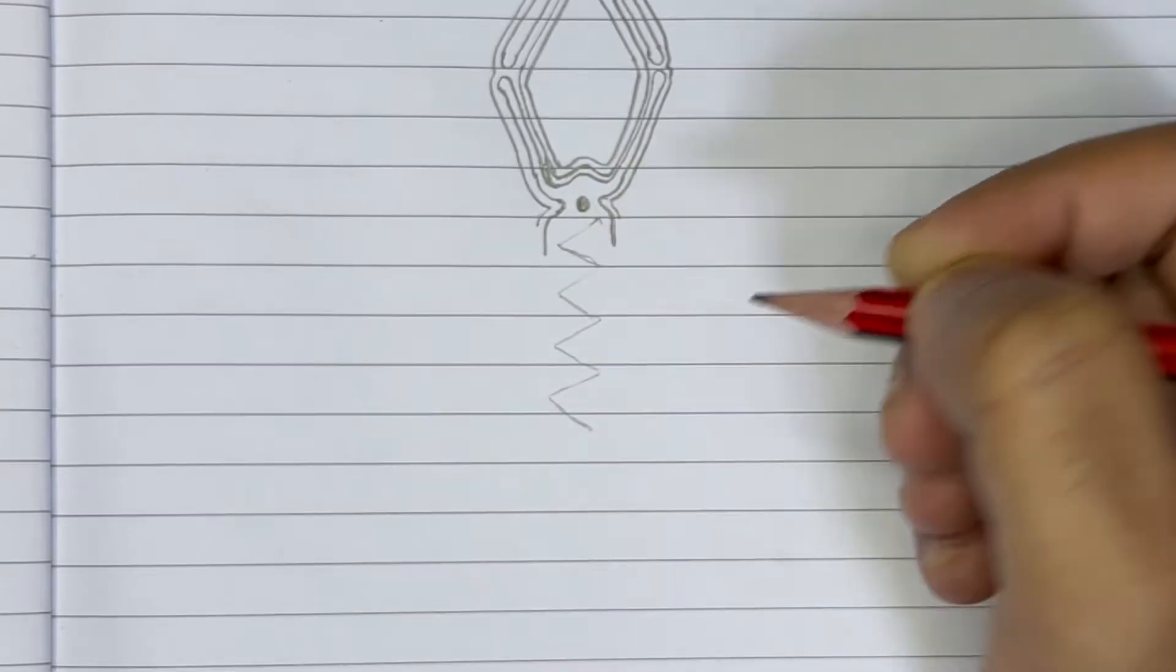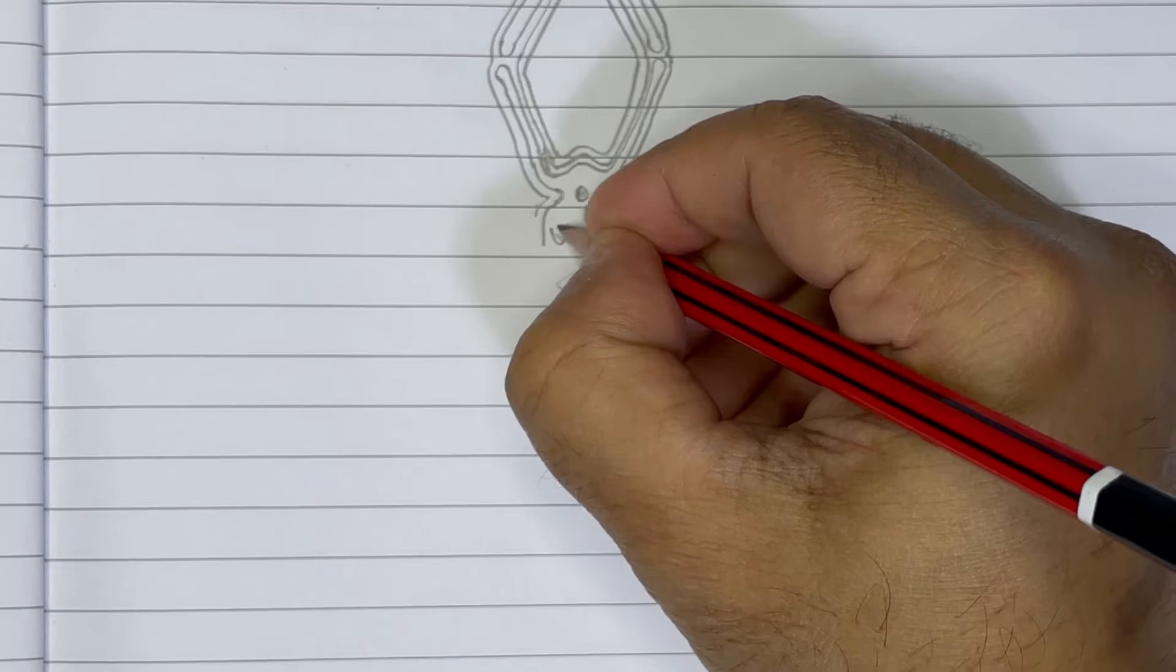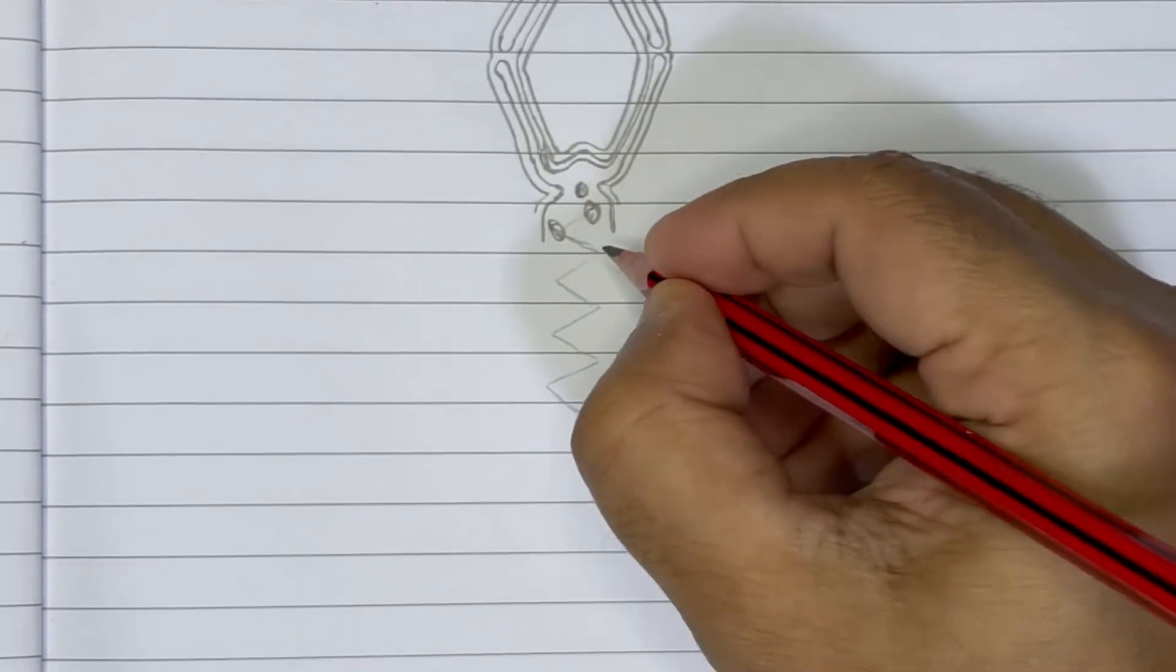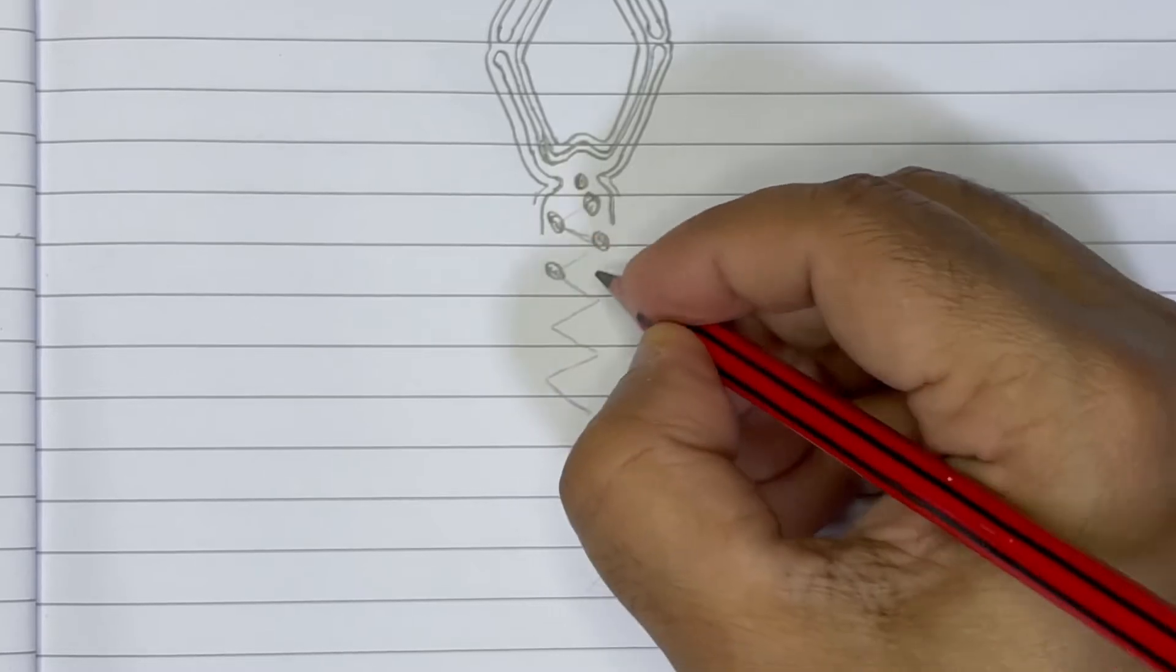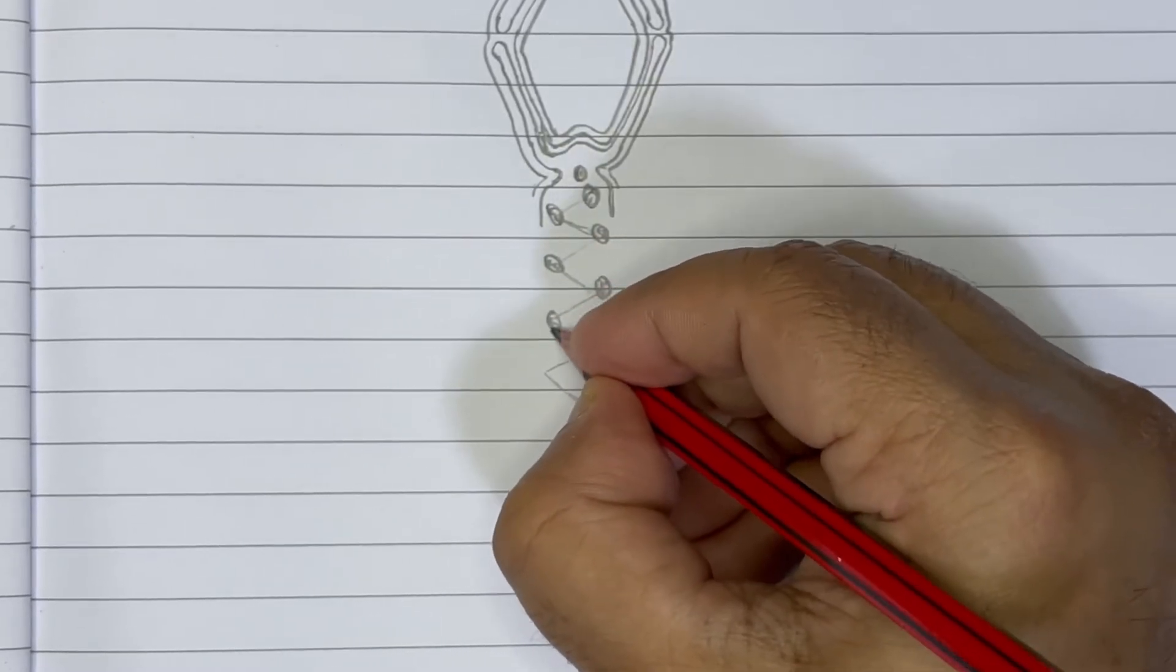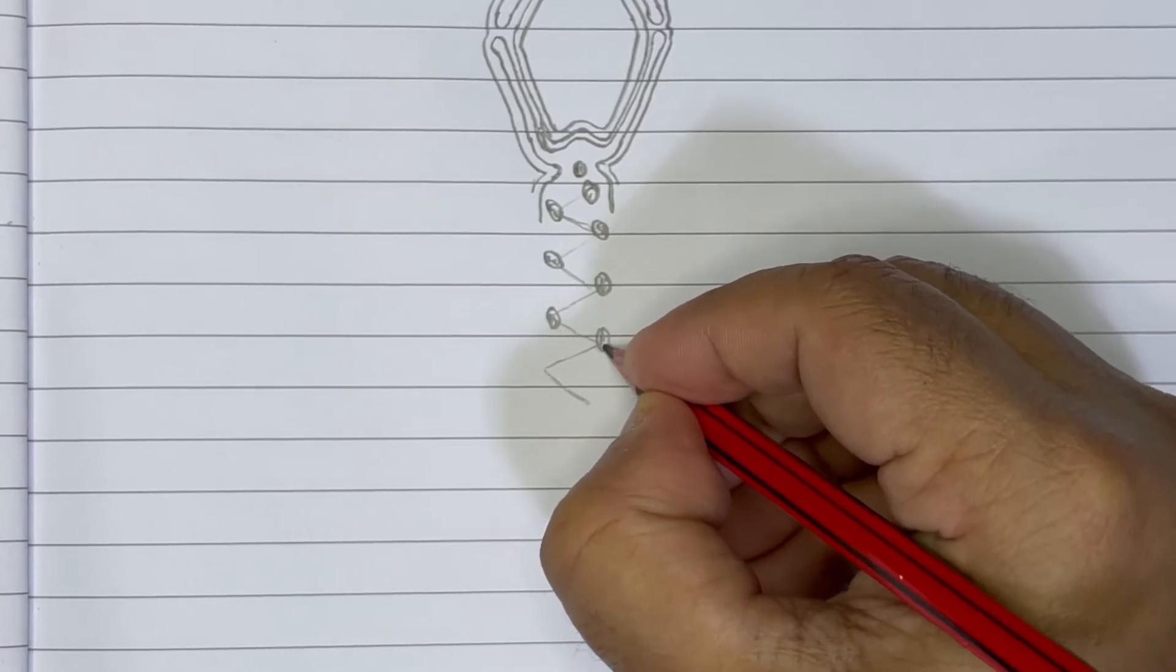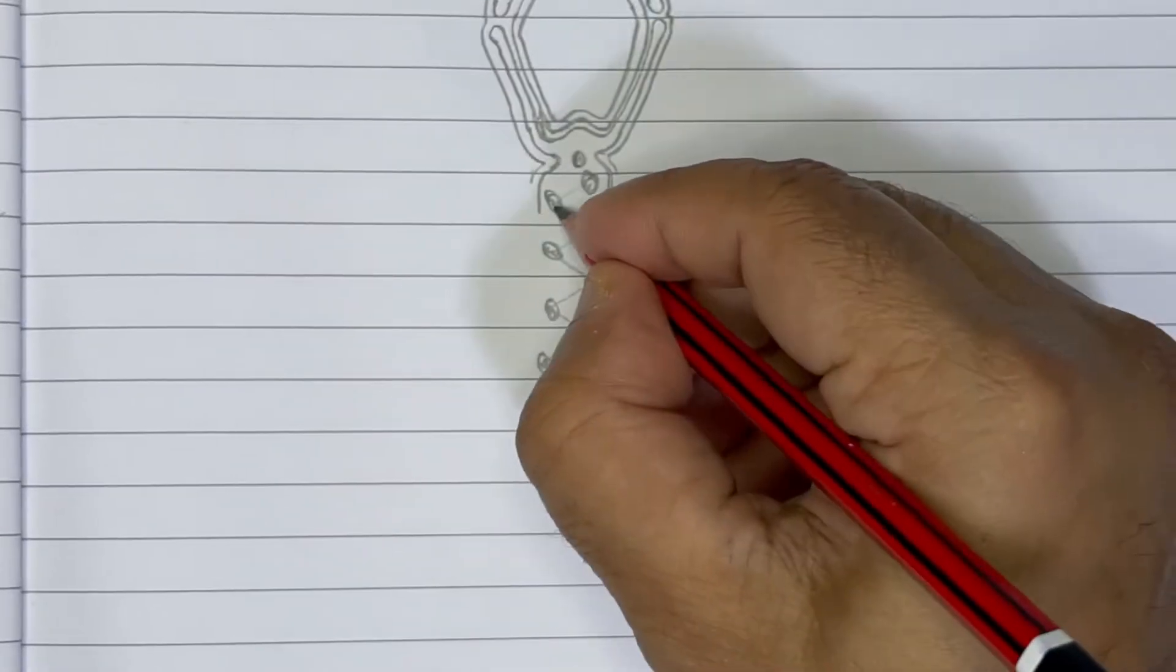For that, we'll draw a basic shape. One, two, three, four, five, six, seven, eight till here. Draw one mitochondria here, another mitochondria, third one, fourth one, fifth mitochondria, sixth, seventh, eighth, ninth.